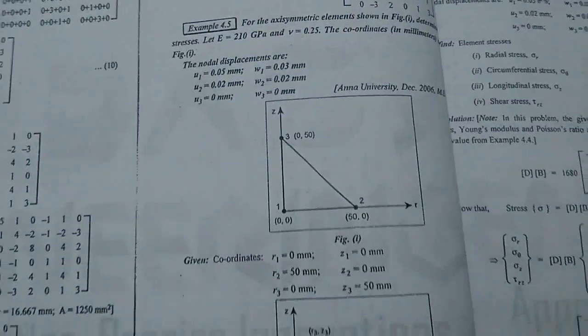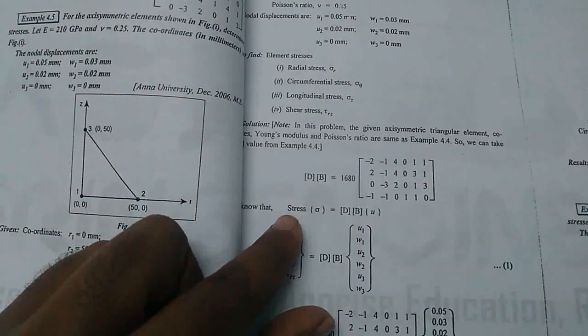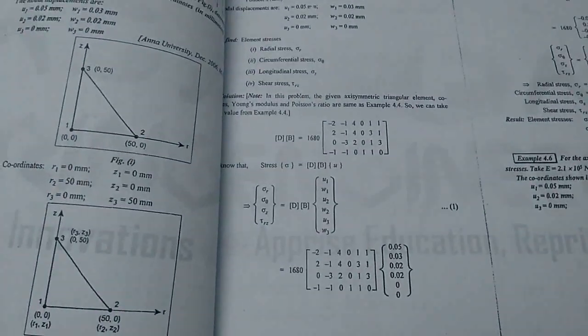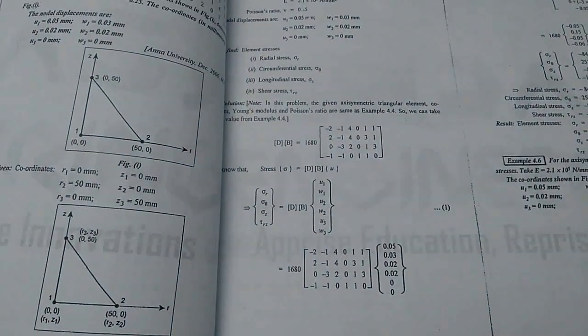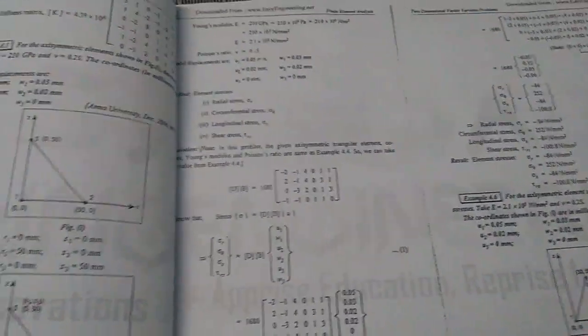The formula for the element stress matrix uses sigma equal to D times B times u. The given data is mu and w. You need Unit 4 formulas.